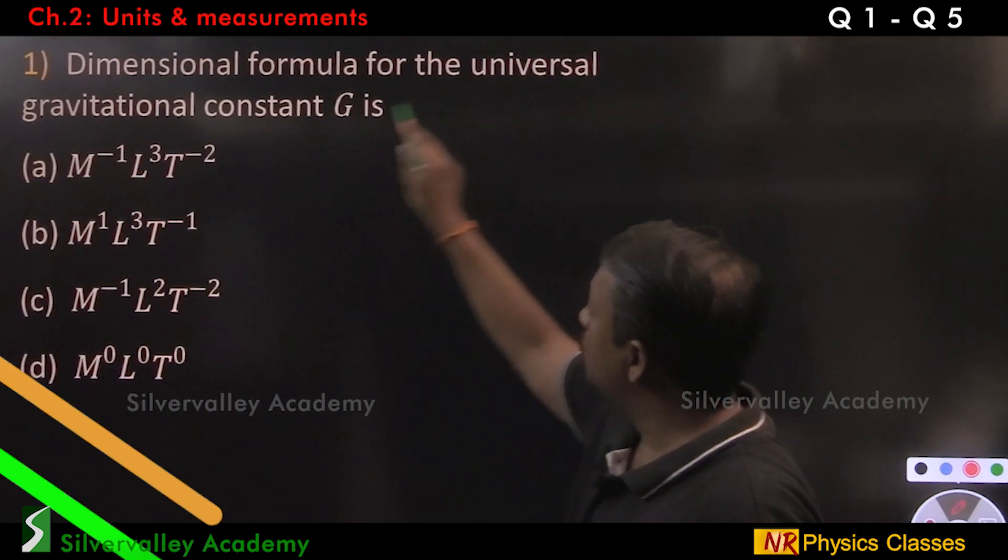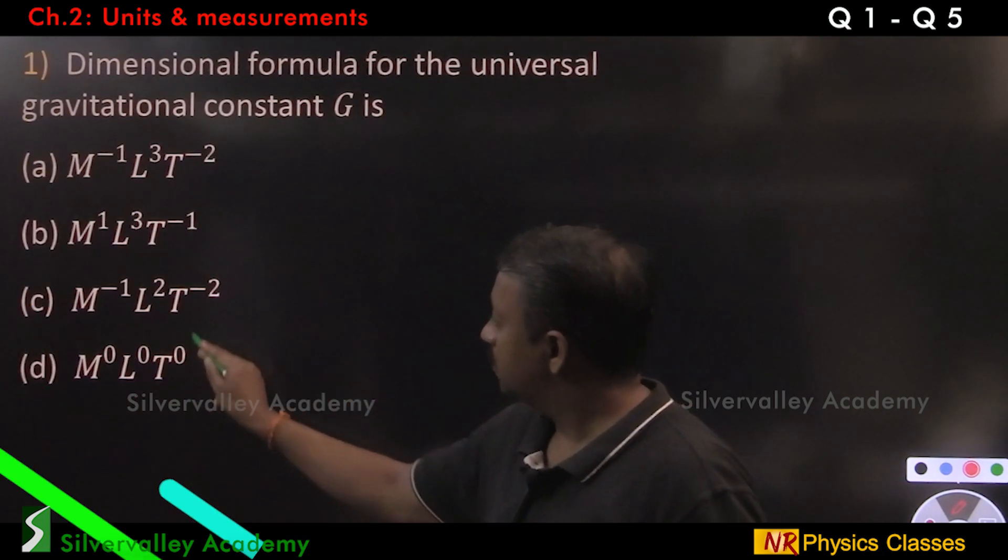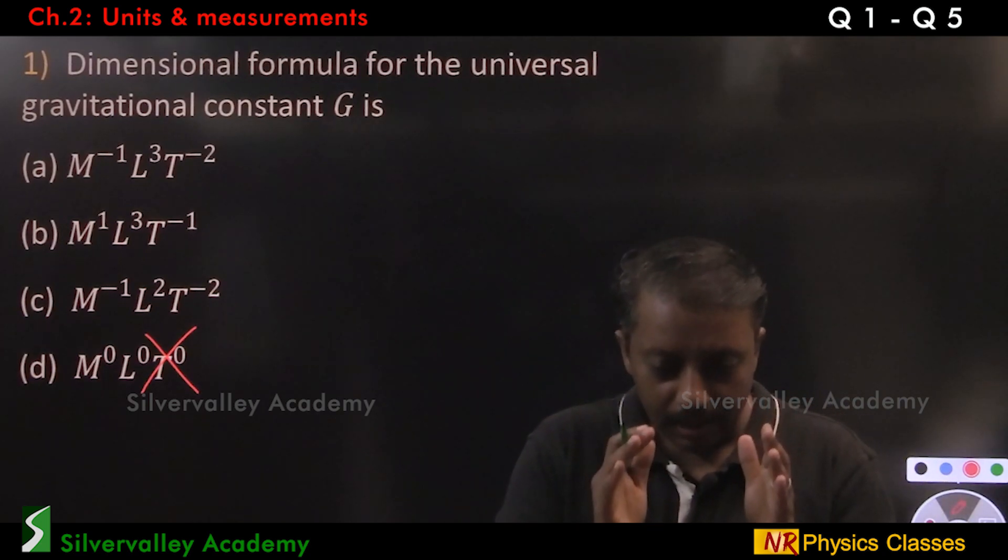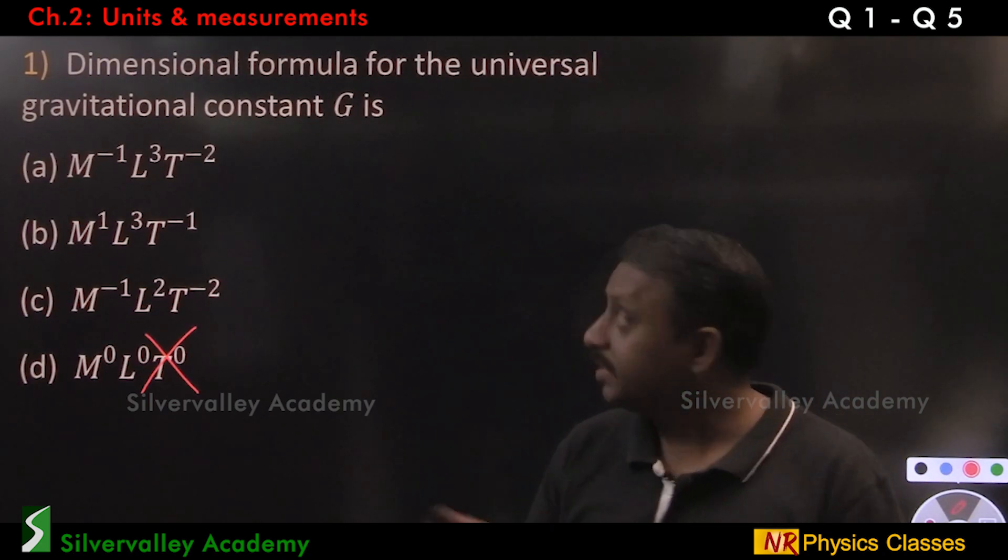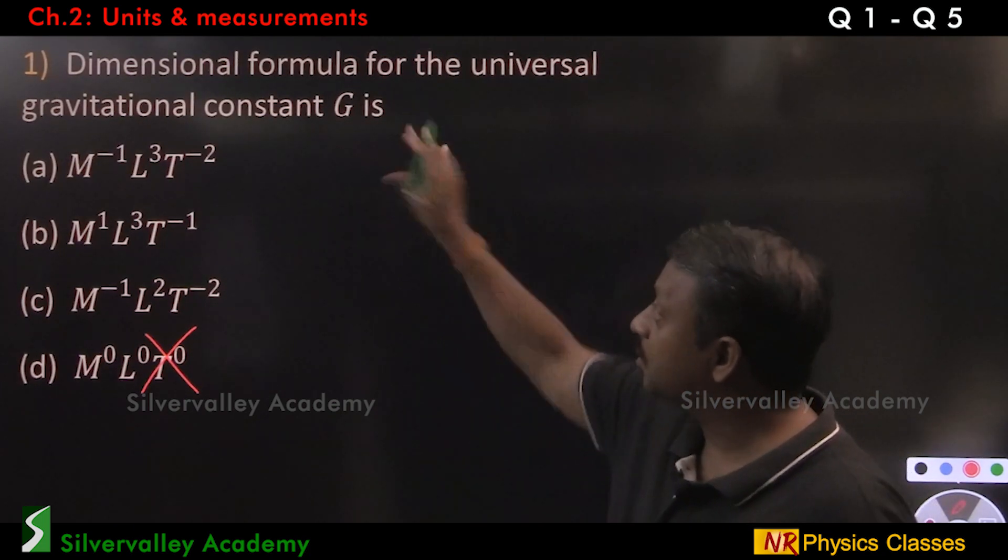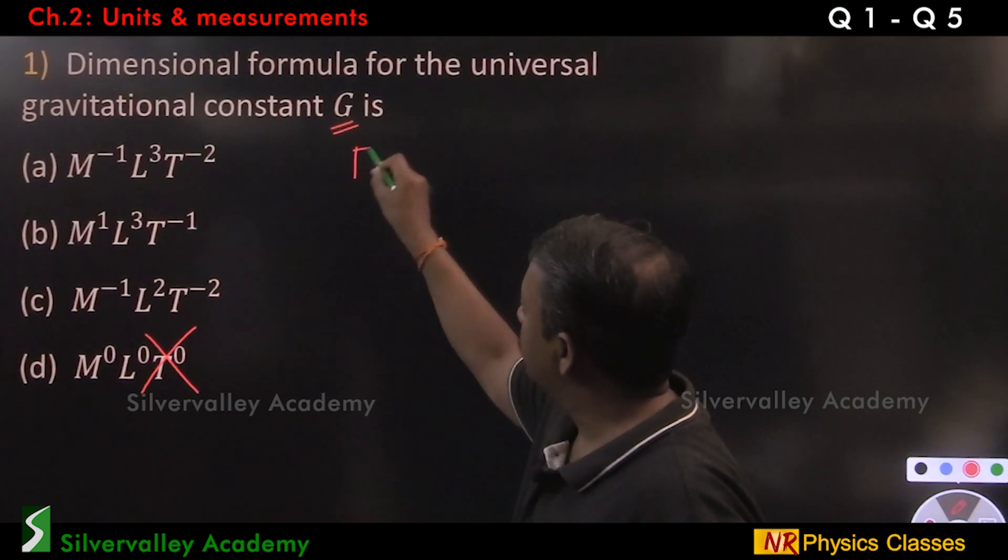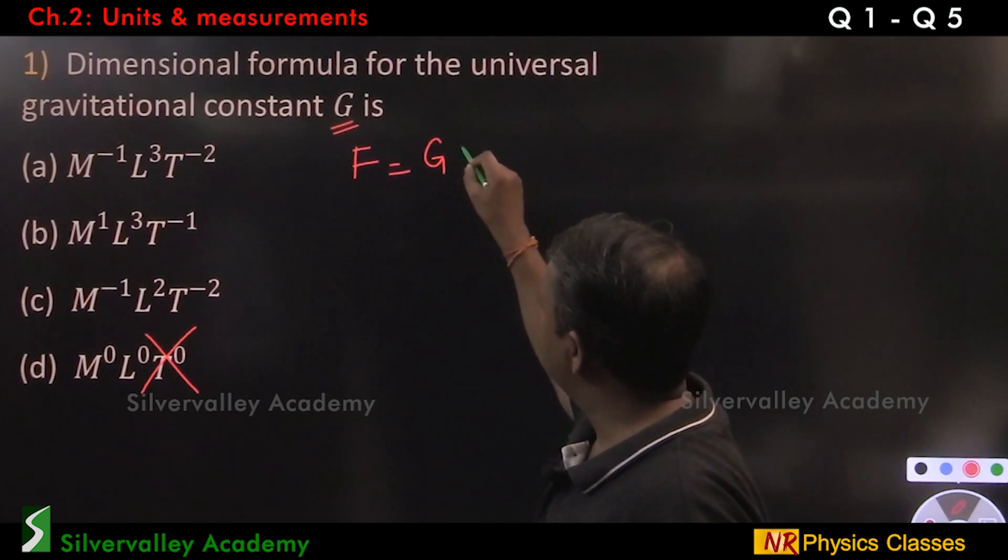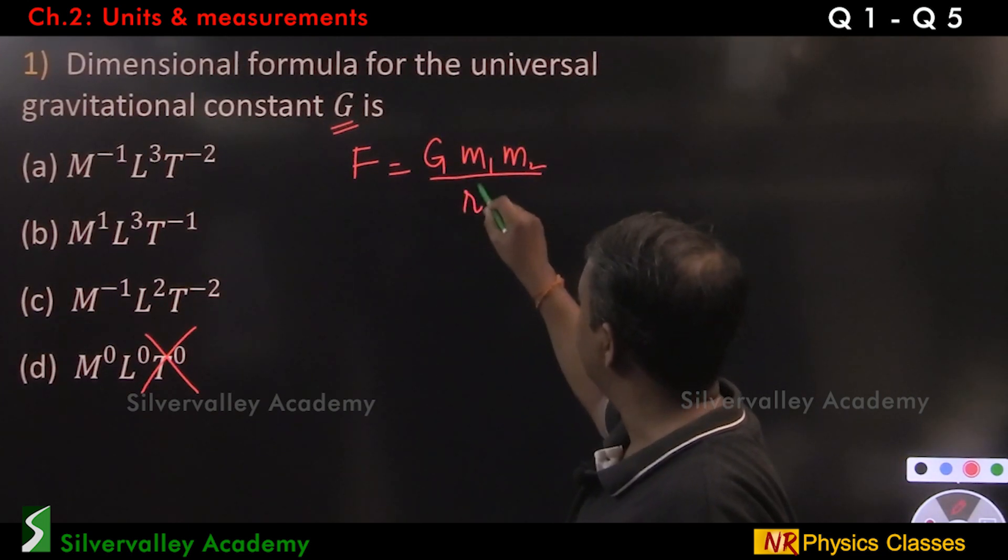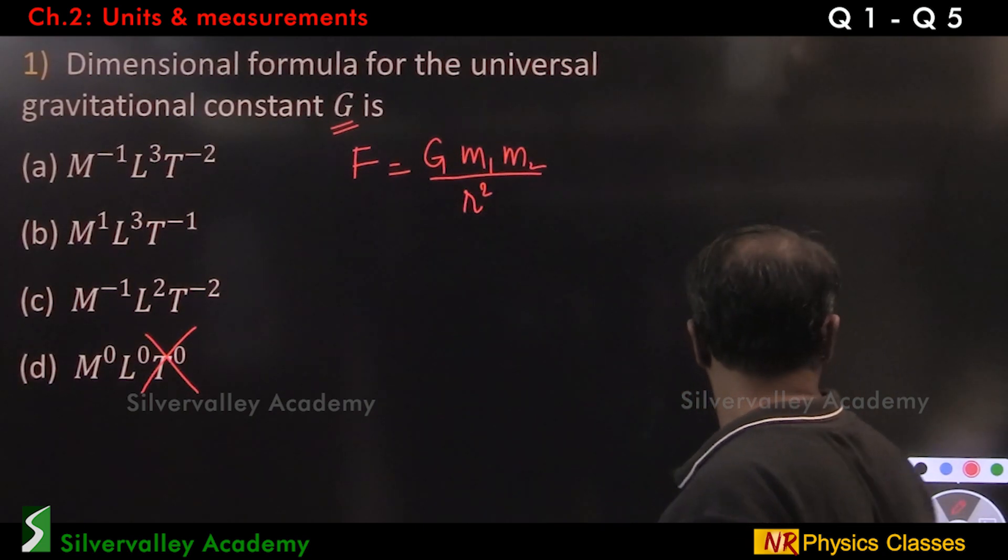Dimensional formula for the universal gravitational constant. This cannot be the answer. Now, assume an equation which involves G. Simplify. That is the idea behind such questions. For example, G is there with G m1 m2 by R square, isn't it? You can pick any equation.